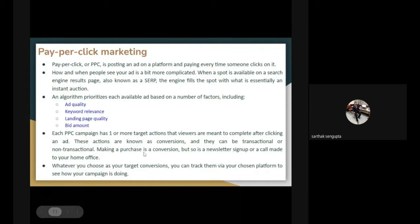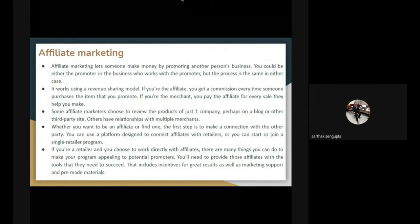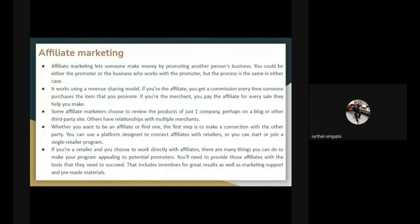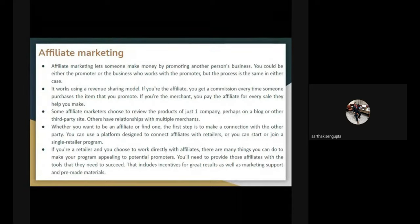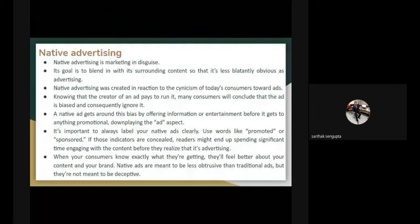Affiliate marketing involves product producers taking the help of retailers or affiliate marketers who sell on behalf of the company, using various digital marketing techniques like WhatsApp groups and Zoom sessions — especially during the COVID pandemic. Native advertising is marketing in disguise — its goal is to blend in with surrounding content so it is less obviously an advertisement. For example, someone going to a tea shop and casually promoting a college when another person mentions being rejected from a different college — that is needs-basis advertising. On digital platforms, promoted or sponsored content has indicators so consumers know what they're getting and feel better about the content and brand.